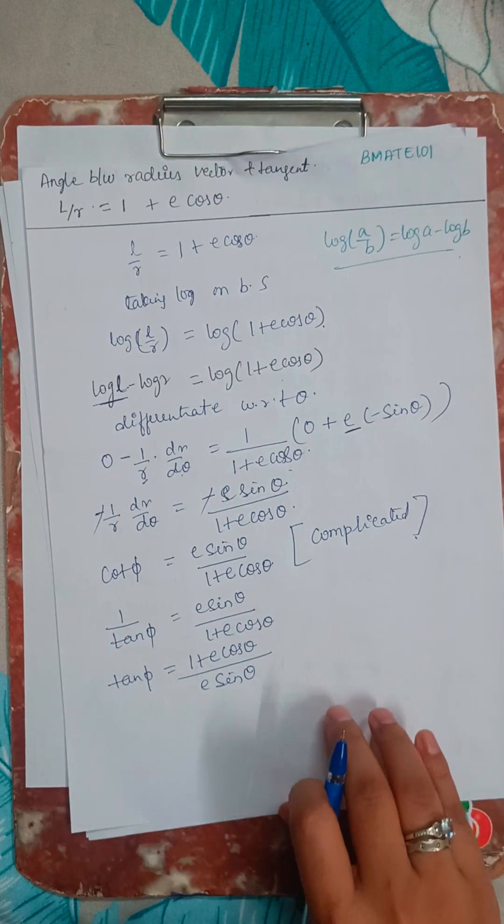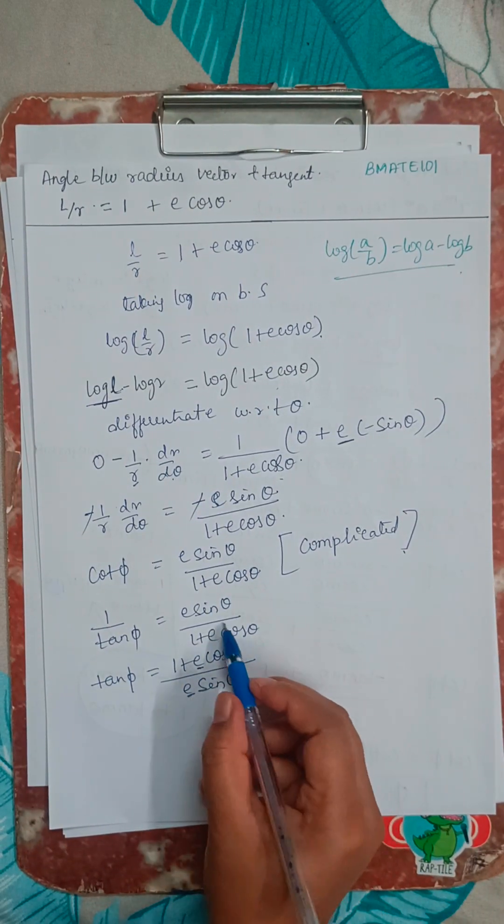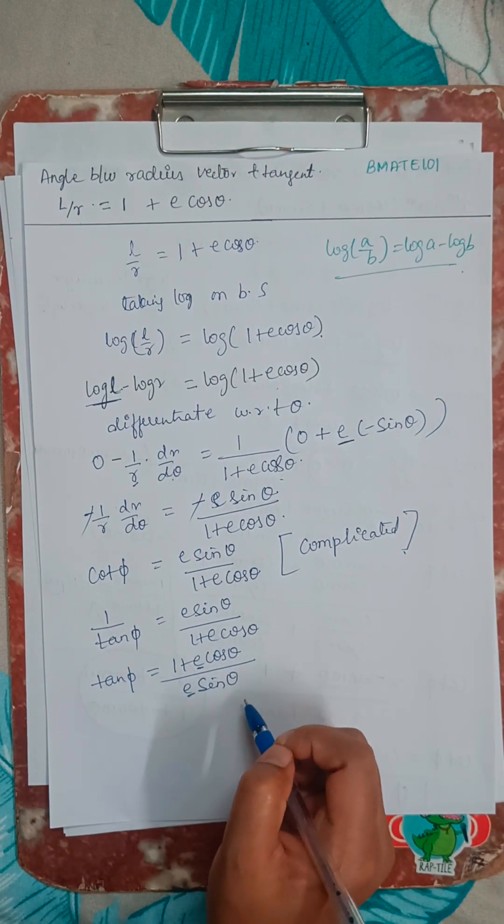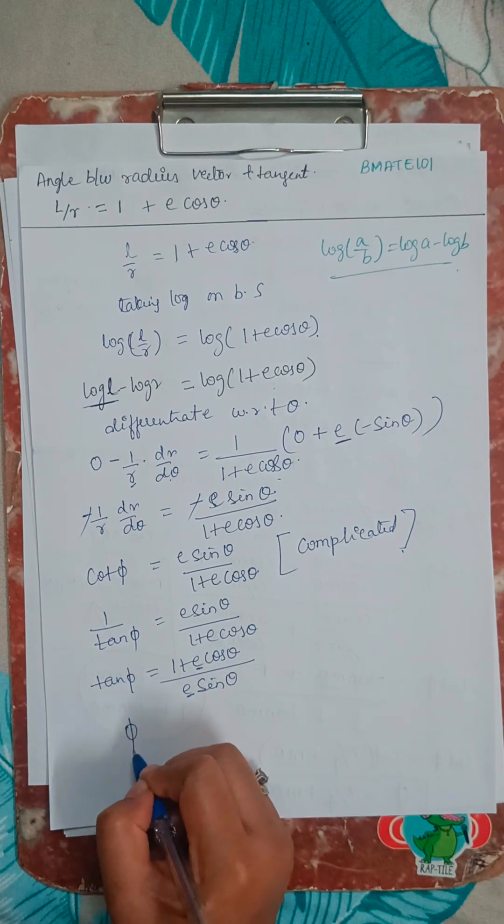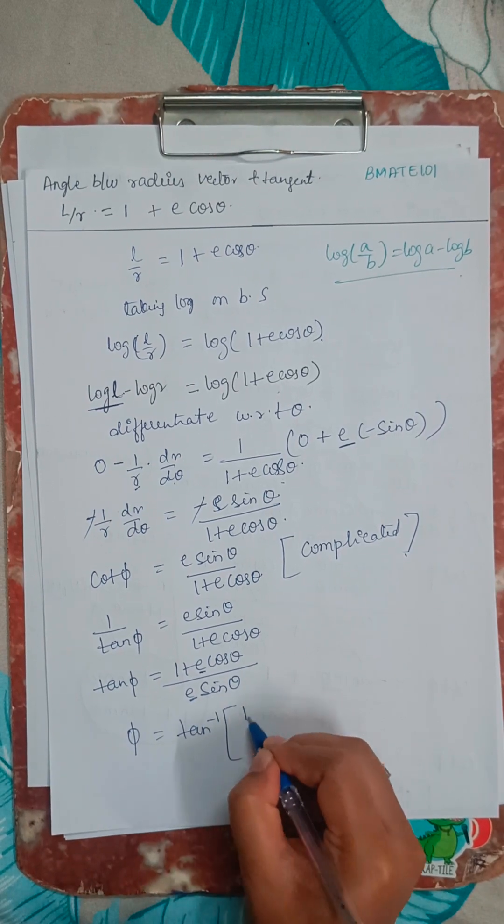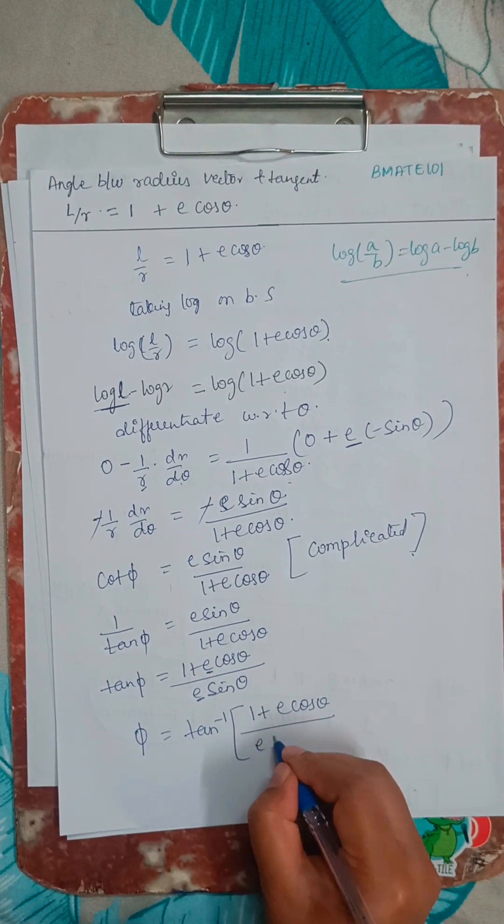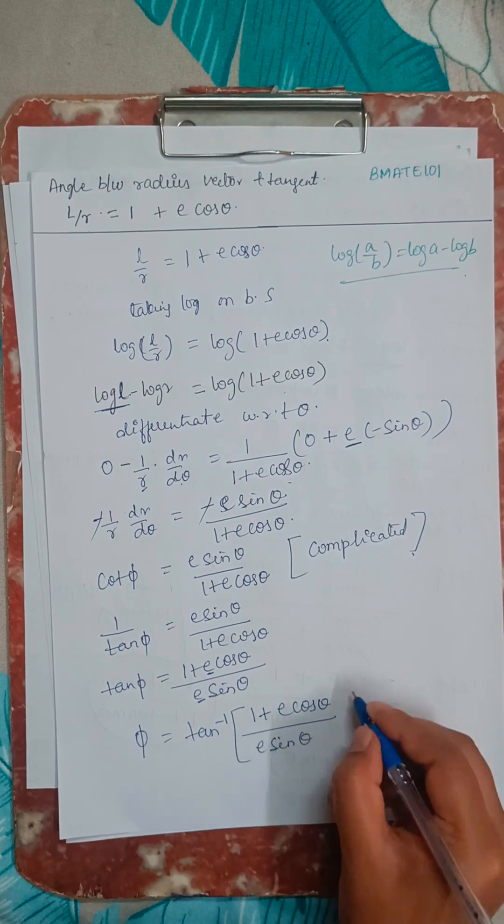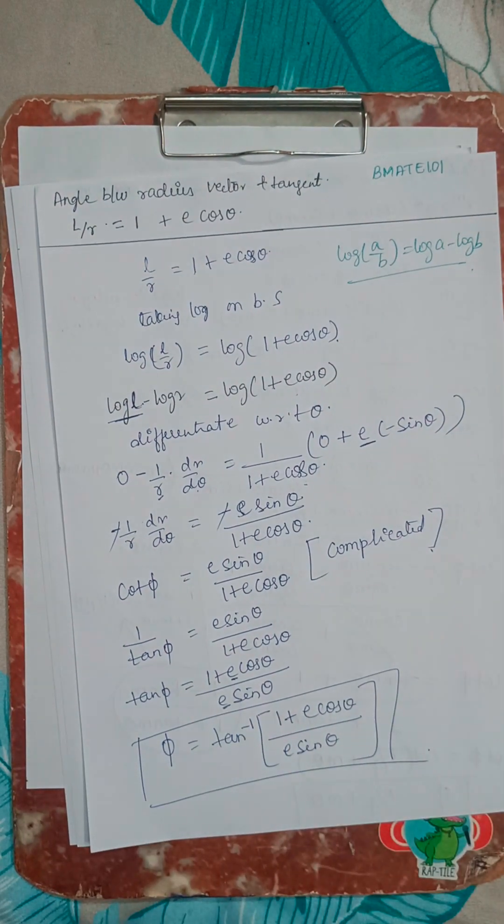So this is a constant value. As this becomes very much complicated to simplify, what we can do? So phi is equal to tan inverse of 1 plus E cos theta divided by E sin theta. Hence, this is your solution for this question.